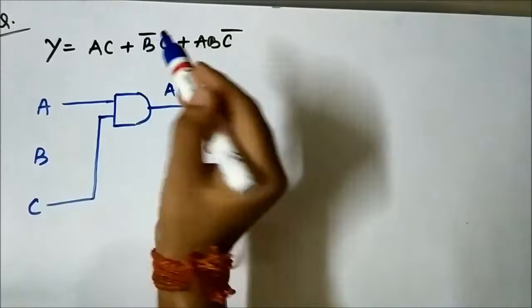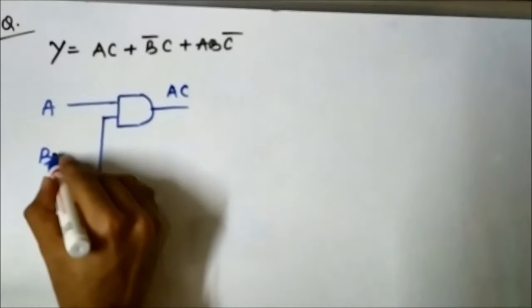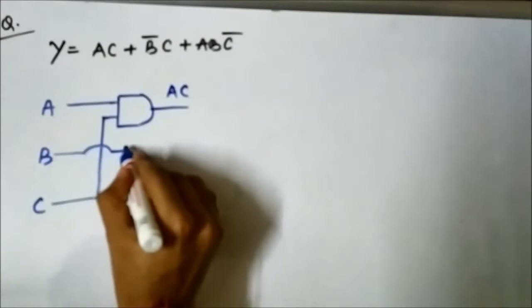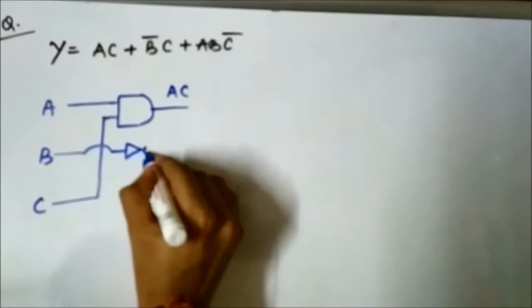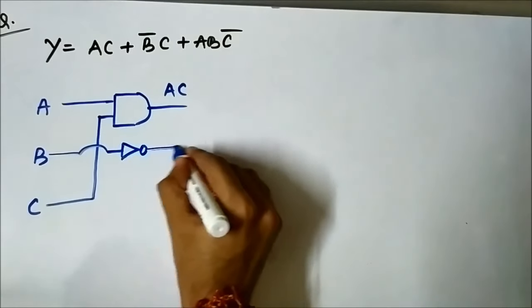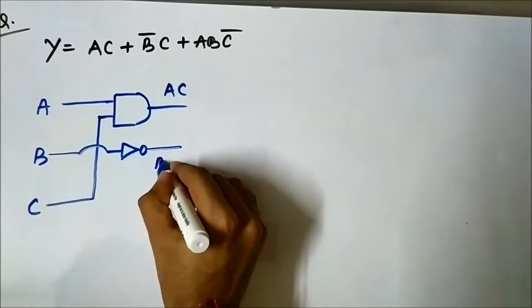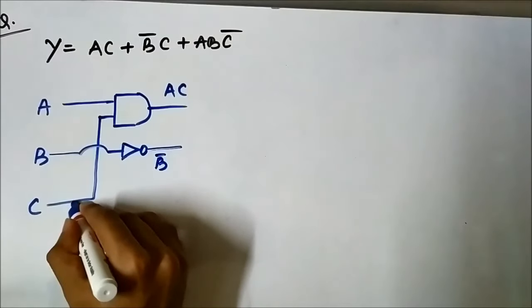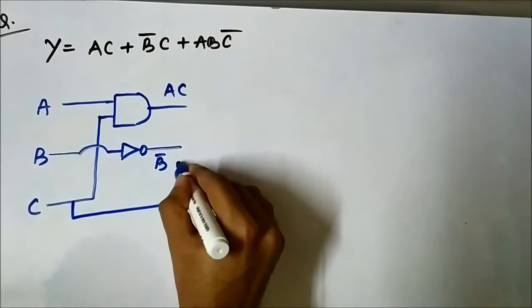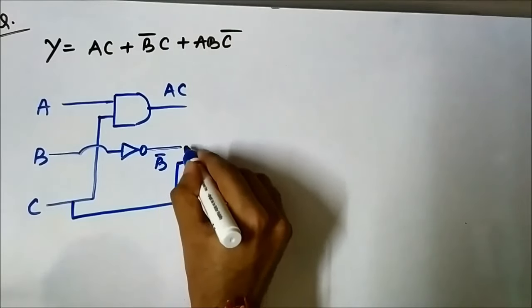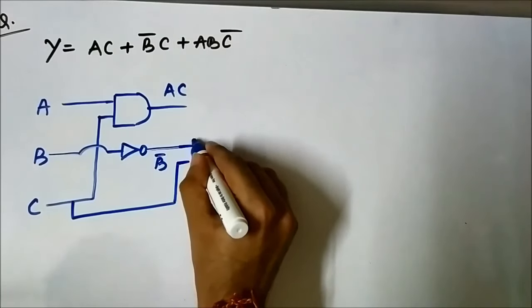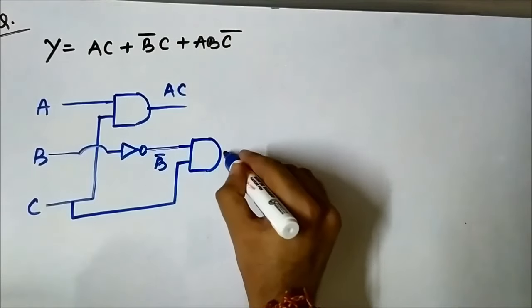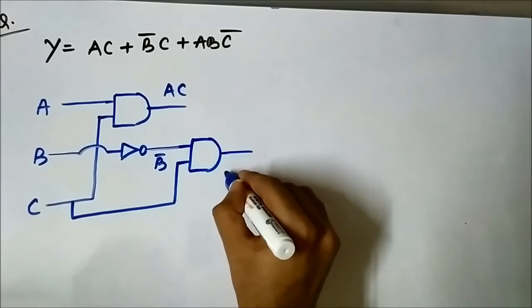Then there is B̄C. For that, B is passed through an inverter or NOT gate to get B̄. Then it is ANDed with C to get B̄C.